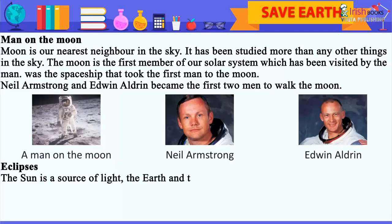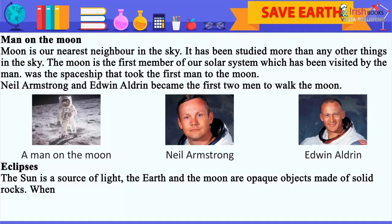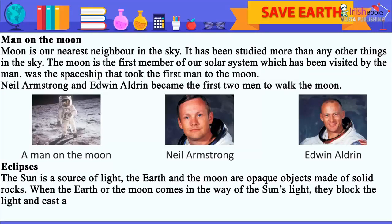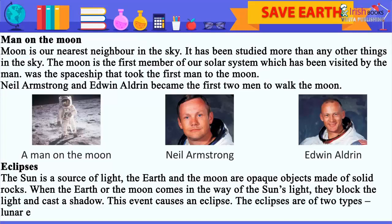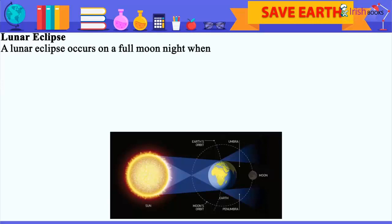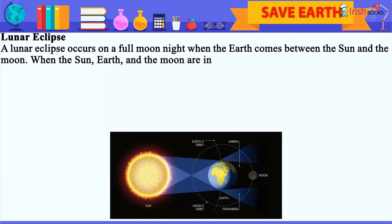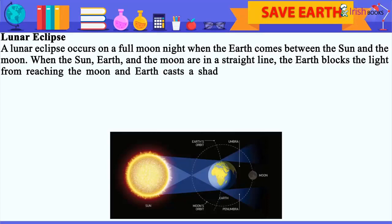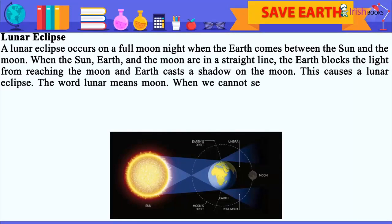Eclipses: The sun is a source of light. The earth and the moon are opaque objects made of solid rocks. When the earth or the moon comes in the way of the sun's light, they block the light and cast a shadow, causing an eclipse. Eclipses are of two types: Lunar Eclipse and Solar Eclipse. A lunar eclipse occurs on a full moon night when the earth comes between the sun and the moon. When the sun, earth and the moon are in a straight line, the earth blocks the light from reaching the moon and casts a shadow on the moon, causing a lunar eclipse.